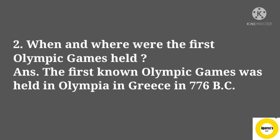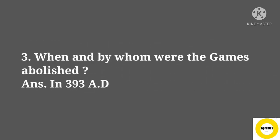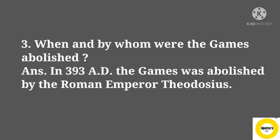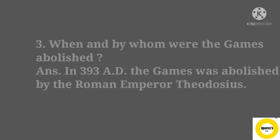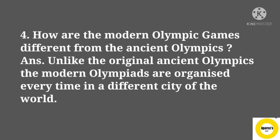Question number 2: When and where were the first Olympic Games held? Answer: The first known Olympic Games were held in Olympia in Greece in 776 BC. Question number 3: When and by whom were the games abolished? Answer: In 393 AD, the games were abolished by the Roman Emperor Theodosius.